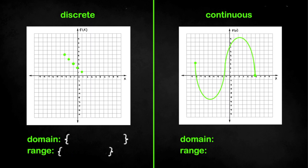Remember that the first graph is discrete meaning that we need to write the individual values. For domain we will write the individual x values which are negative 3, negative 2, negative 1, 0, and 1.